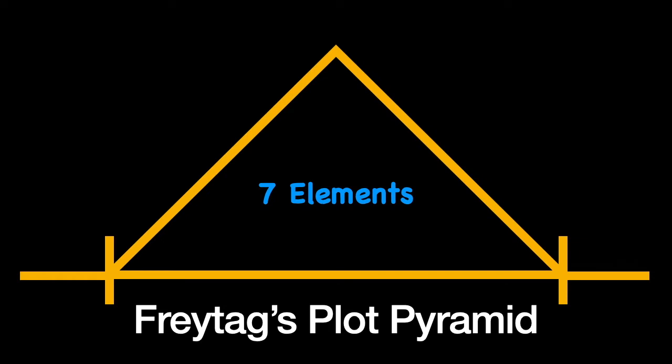We're going to focus on the seven elements, and then we'll look at how they connect to Romeo and Juliet. The first element is exposition — any information the audience needs to know in order to follow the play. It's all the background information and maybe the introduction of characters.